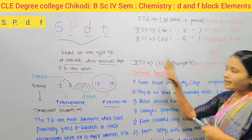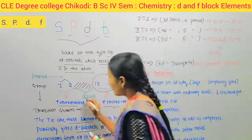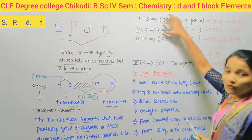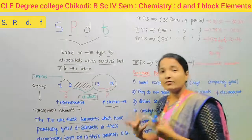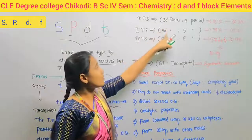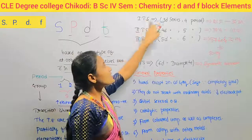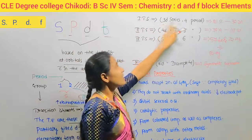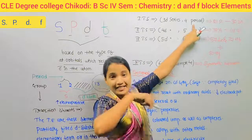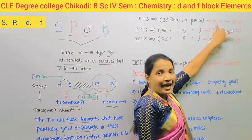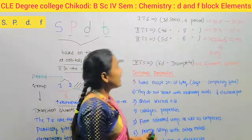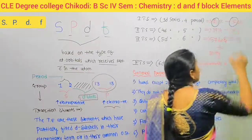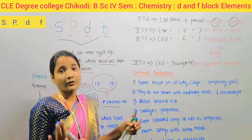D-block elements can be classified into series. The first transition series is the 3D series, belonging to the 4th period. It is from atomic number 21 (scandium) to atomic number 30 (zinc).